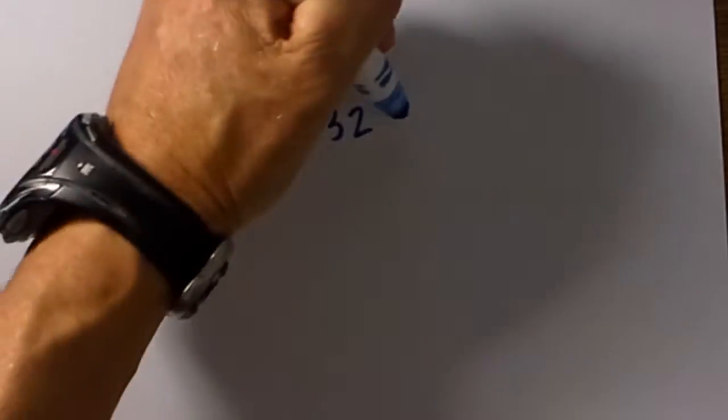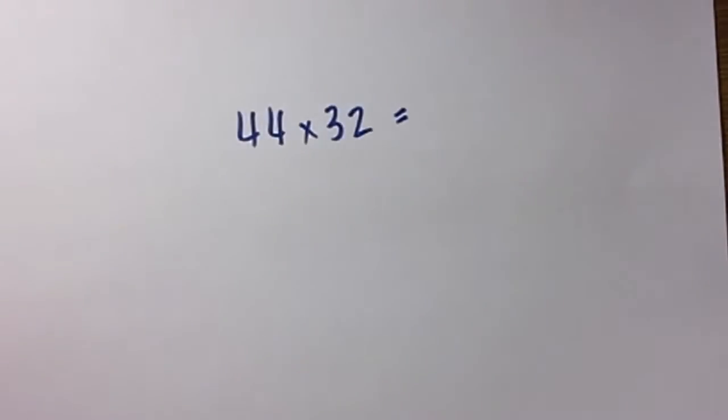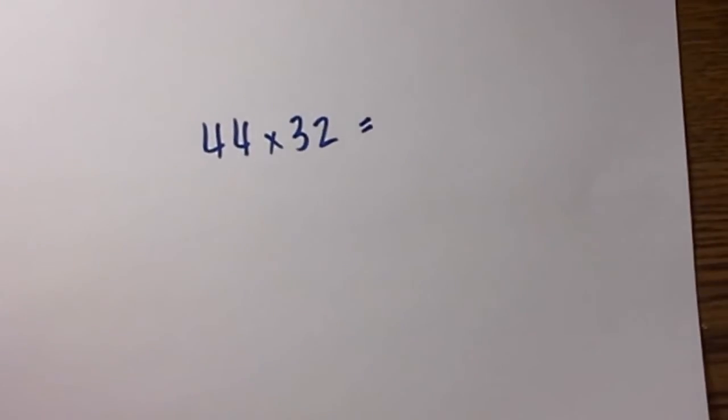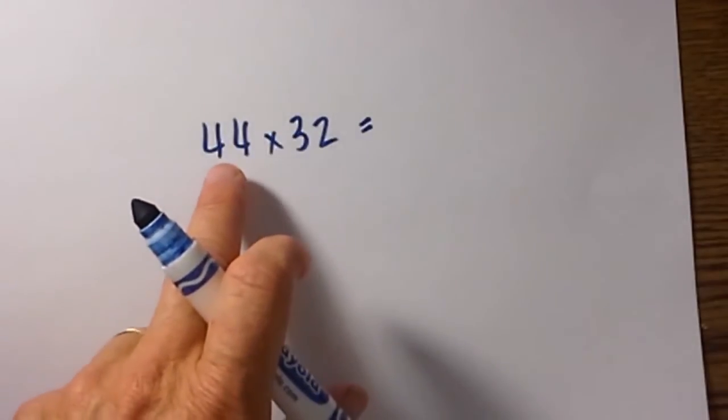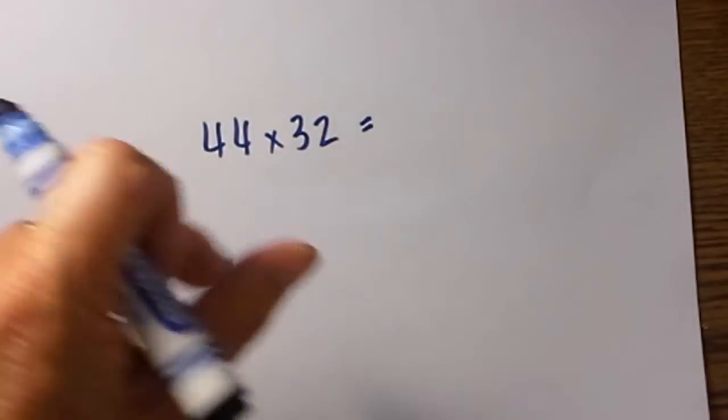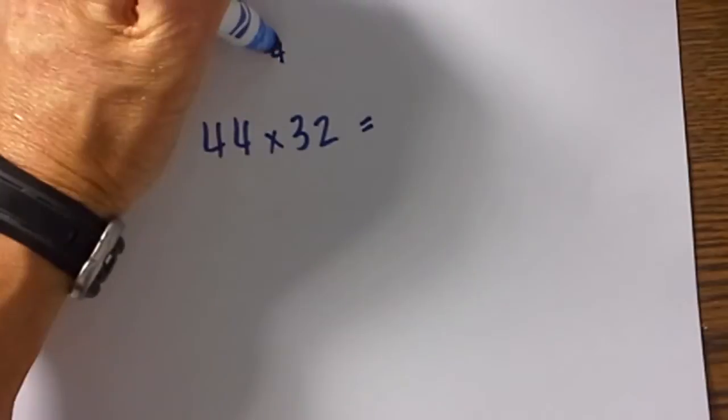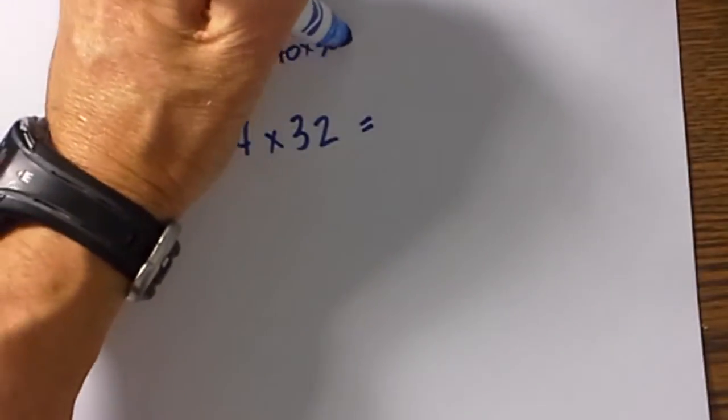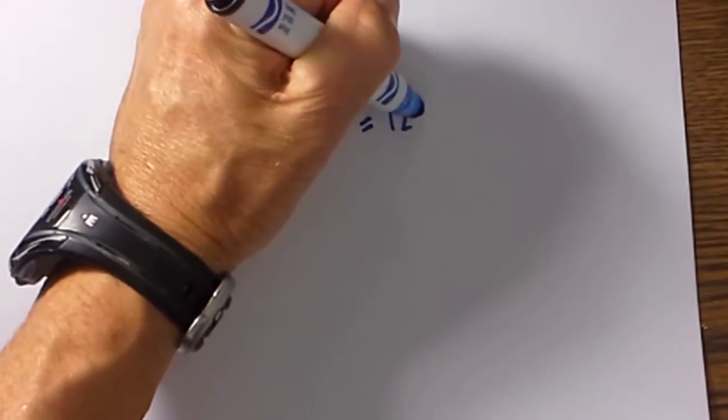This technique takes advantage of multiplying numbers that end in zero. Then you can easily add this up. Let me give you one example and then we can talk about it. The first step is you take 40 times 30. We have 40 times 30 which equals 1200.